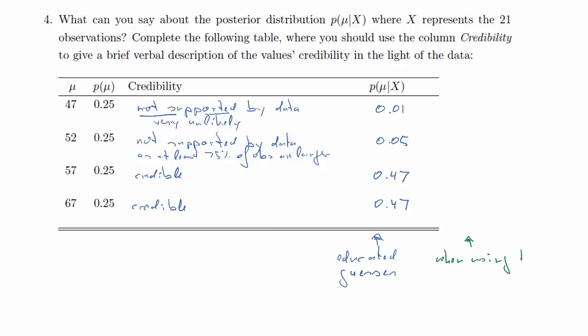Now actually, if you have the data, which I have, and do all the calculations, what you get as posterior probabilities, and you couldn't get that with the information given, was actually zero for the first two, and 61% for 57, and 39% for 67. So it turns out the average, the sample average, actually a little closer to 57 than 67, which is why it assigns a large probability to 57. But you couldn't see that from just looking at the data.